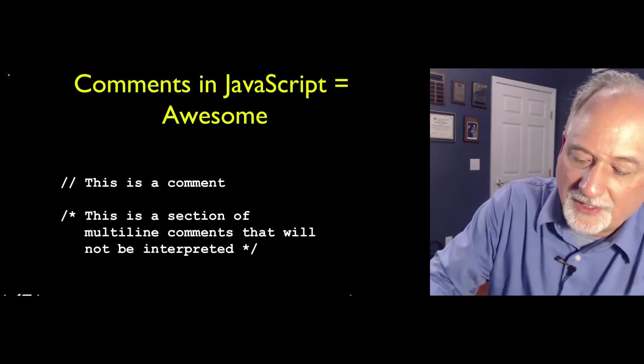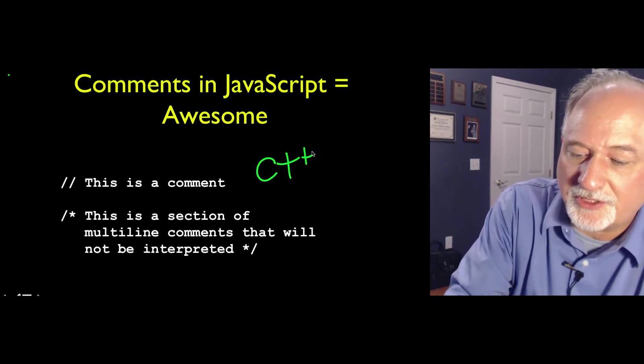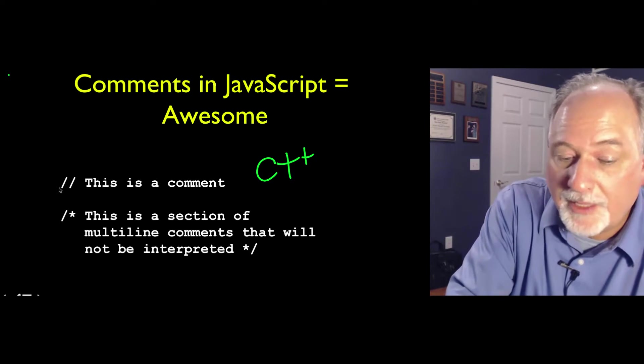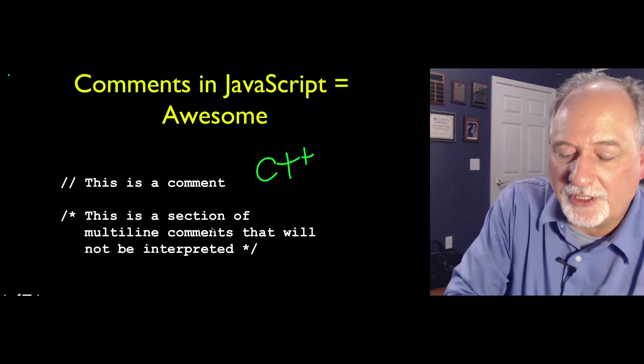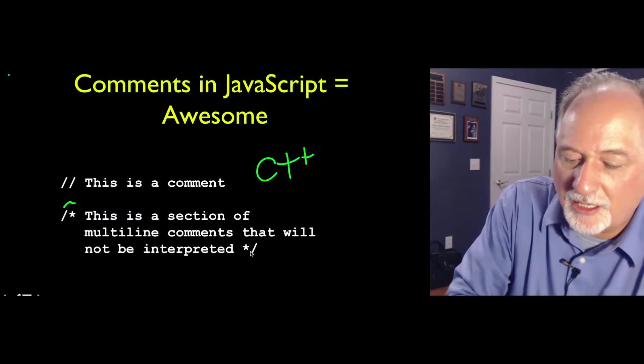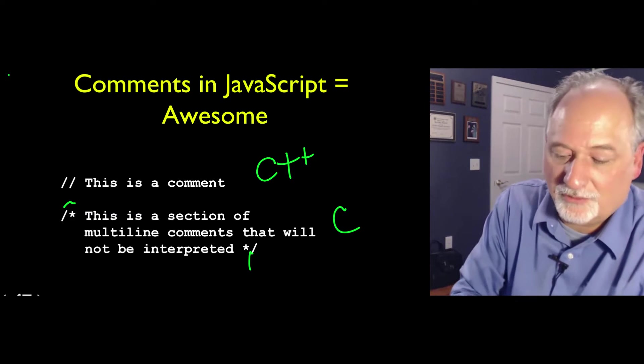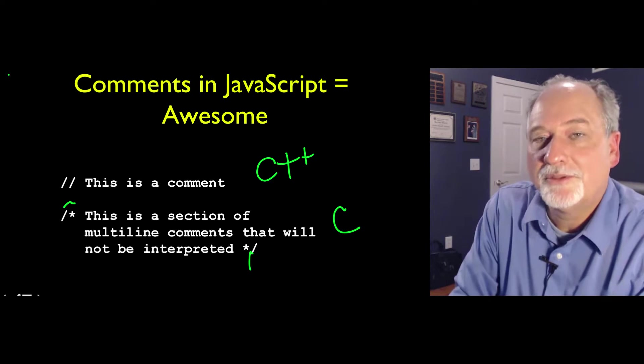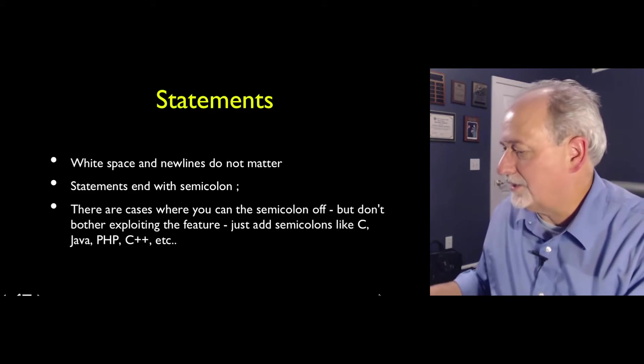It has two basic forms of comments. One is a double slash, which is like a C++ form of a comment that says from here to the end of the line. You can also have multiline comments that start with slash star to end, and that's like a C language comment. We like both single line comments and multiline comments in JavaScript, and that's quite nice.